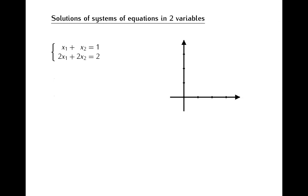Here we have one more example — again a system of two equations in two variables. What is special about this system is that the second equation is just obtained by multiplying the first equation by two. From the perspective of finding solutions, this means that the second equation doesn't give us any additional information beyond what we know from the first equation, because if we find numbers x1 and x2 that satisfy the first equation, those numbers will automatically satisfy the second equation. So when solving this system, we can simply forget about the second equation and deal with just the first one.